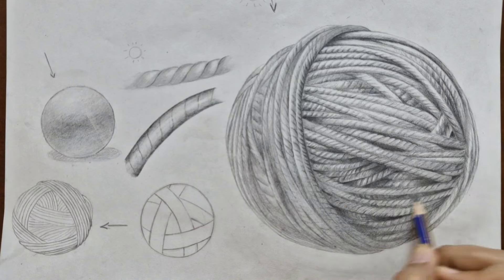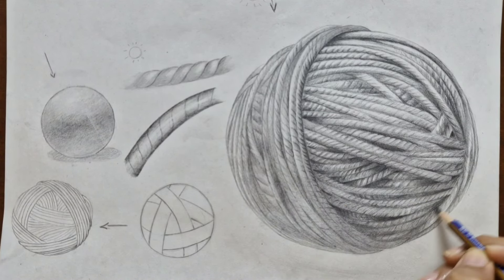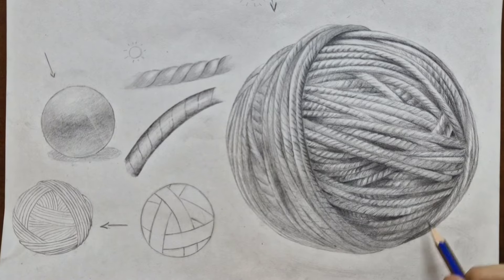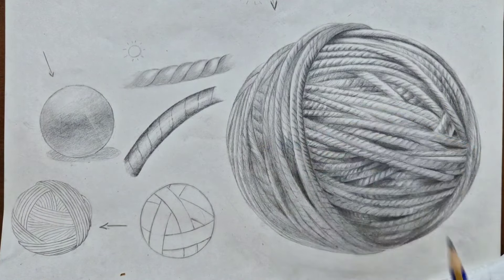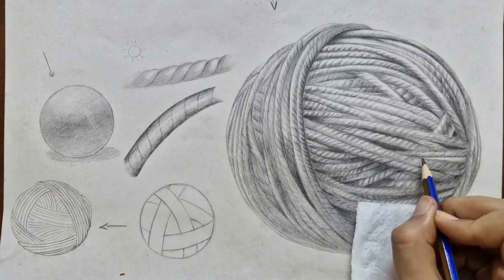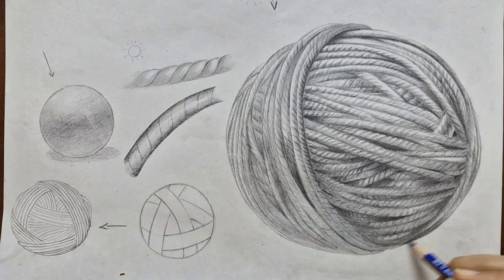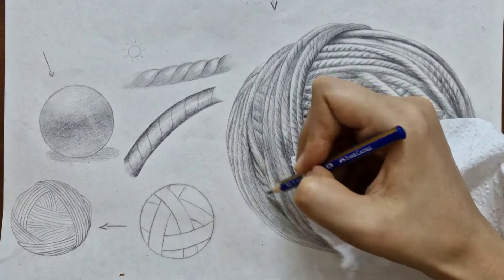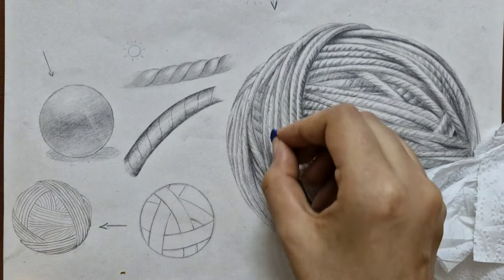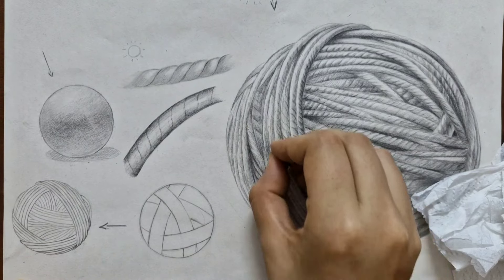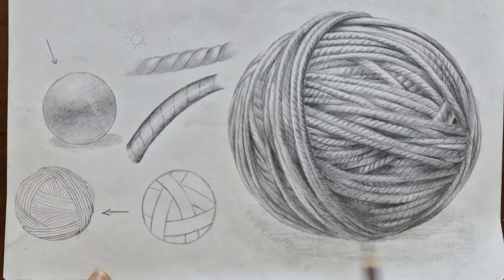After finishing this stage, grab your 6B graphite pencil to add more contrast to your drawing. Make the shadows even darker and add depth to the threads hidden behind the top strands. You can also emphasize the highlights and make them lighter using a kneaded eraser. Shade the cast shadow to give it dimension in space.